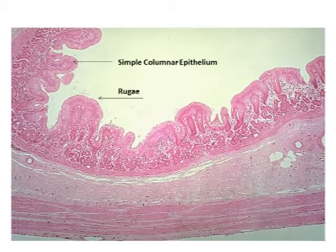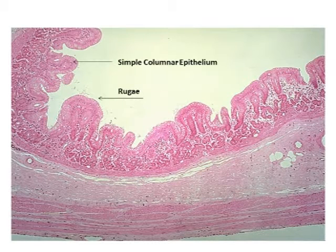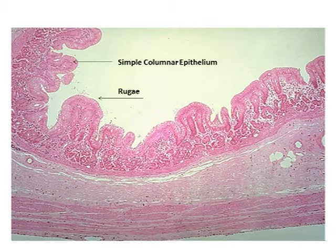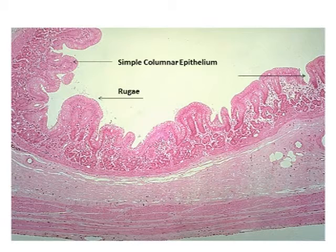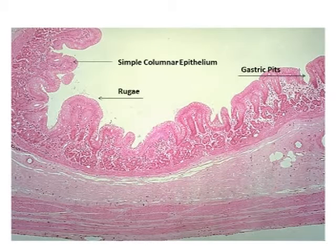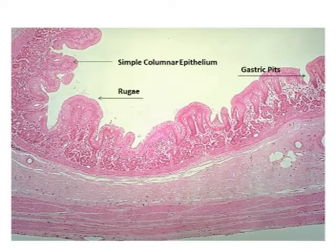Next is the simple columnar epithelium, which is the outer layer of the rugae. The gastric pits are the spaces between the rugae — the white space that you find between the rugae are called the gastric pits.